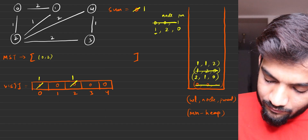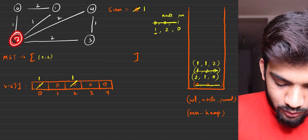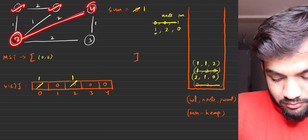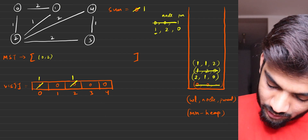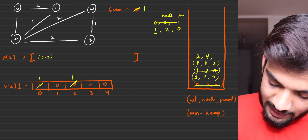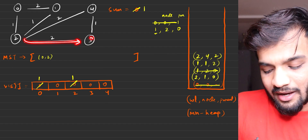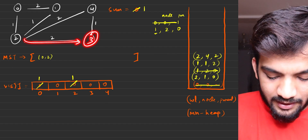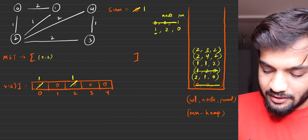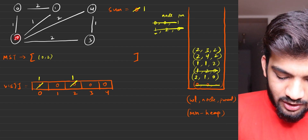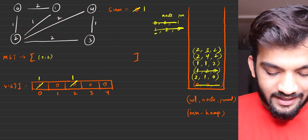Push (1, 1, 2) — edge weight 1, node 1, came from 2. Next, adjacent node 4 is unvisited — push (2, 4, 2): edge weight 2, node 4, came from 2. Adjacent node 3 is unvisited — push (2, 3, 2): edge weight 2, node 3, came from 2. All adjacent nodes of node 2 have been pushed into the priority queue. Iteration at node 2 is complete.